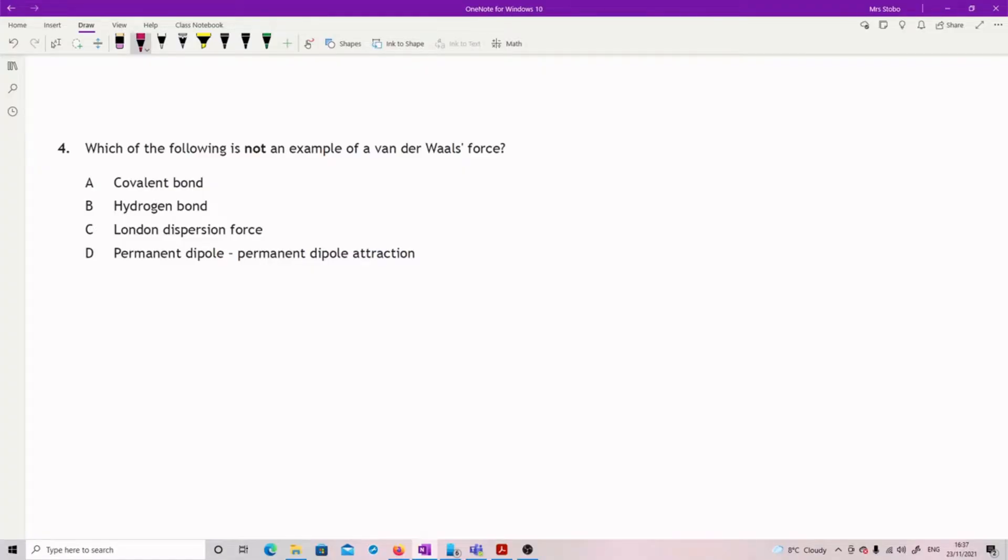So you're expected to know that van der Waals forces are all of the electrostatic attractions. All of the electrostatics would include at the lowest end your London dispersion forces. We then have dipole-dipole attractions, and then of the dipole-dipole attractions we have hydrogen bonds being the strongest ones. So not an example is a covalent bond.